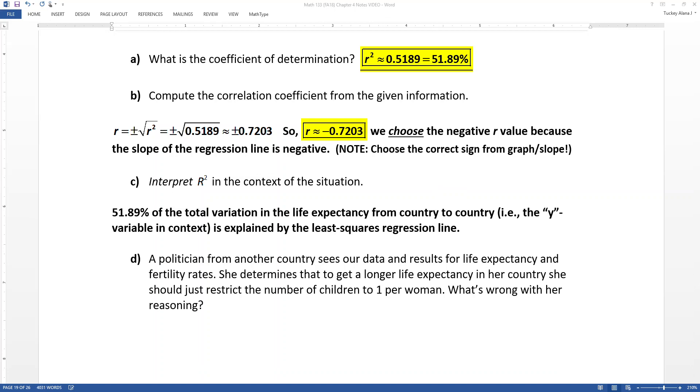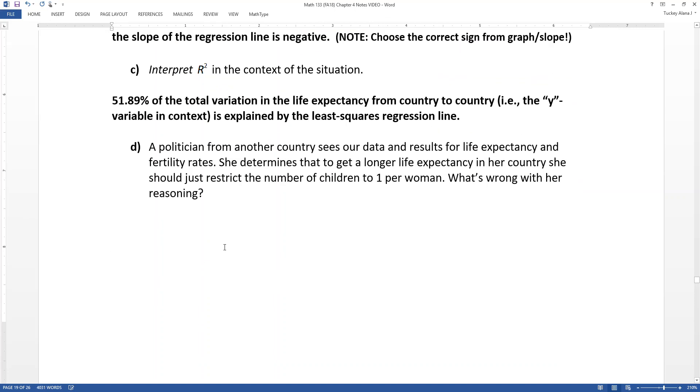Speaking of other variables, let's look at this politician. So a politician from another country sees this data and results from life expectancy and fertility rates. She determines that to get a longer life expectancy in her country, she should just restrict the number of children to one per woman. That's it. We're just going to make it so everybody has one per woman. What's wrong with that reasoning?